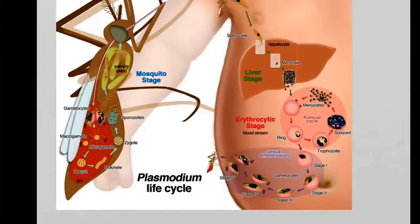Sooner or later, the liver cell can't stand it any longer and it will simply burst, destroying the liver cell. It releases lots and lots of these merozoites—we've got thousands of these merozoites—and they are released into the bloodstream.